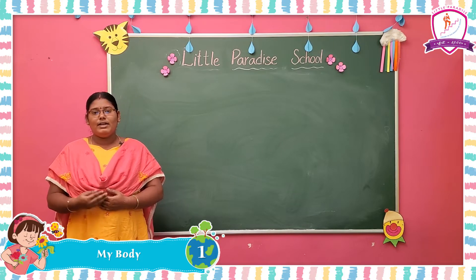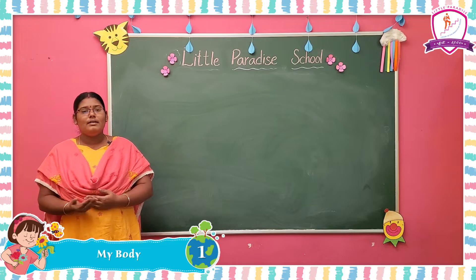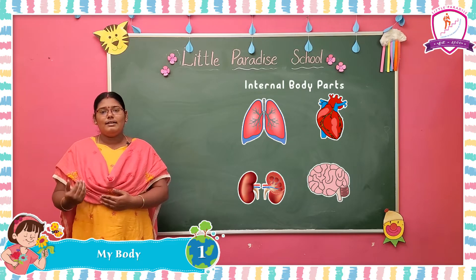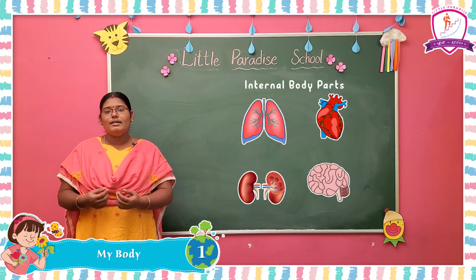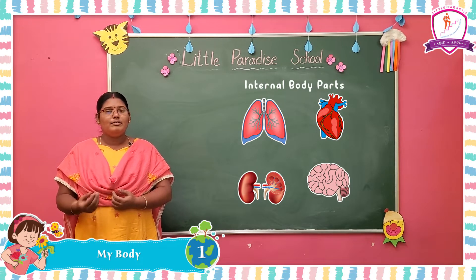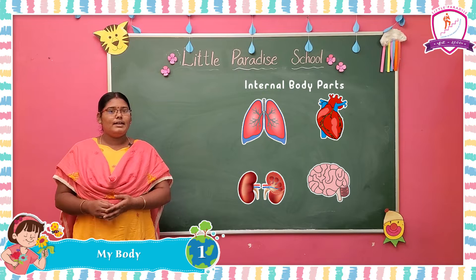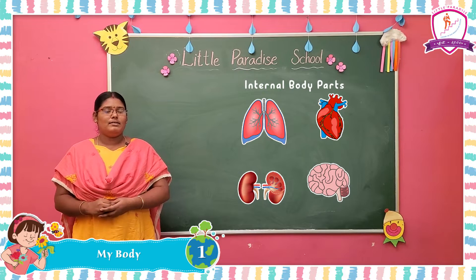For example, lungs, heart, kidney and brain — these are called internal body parts.